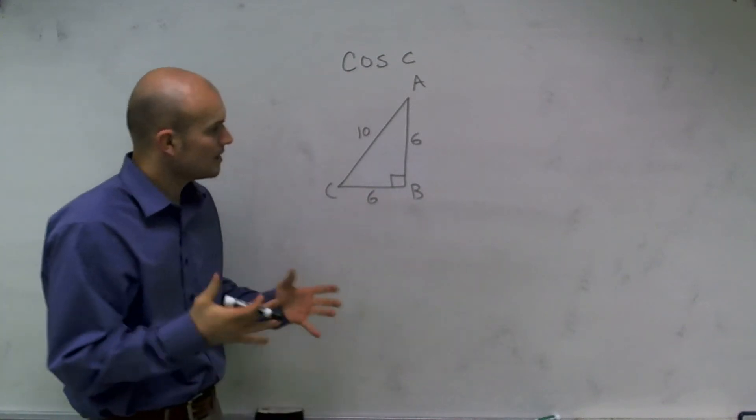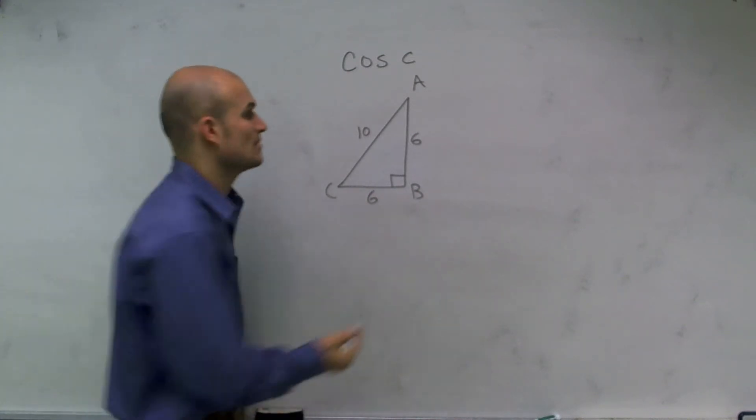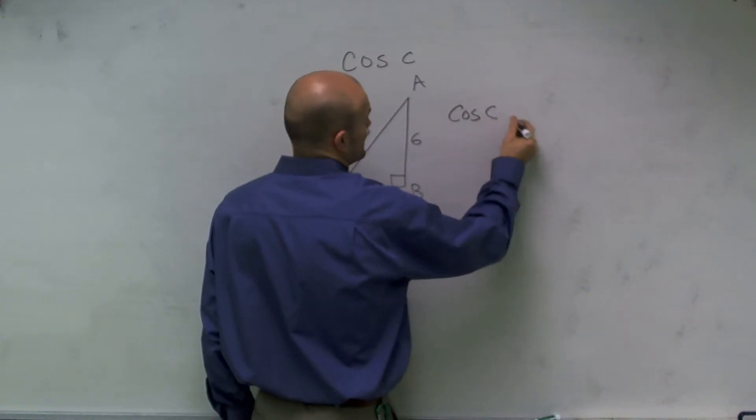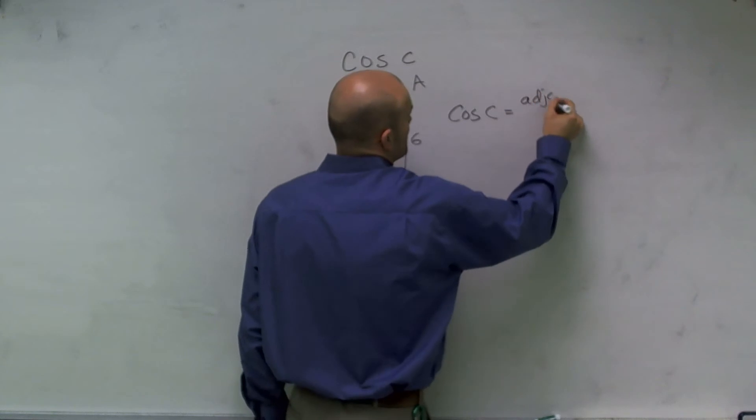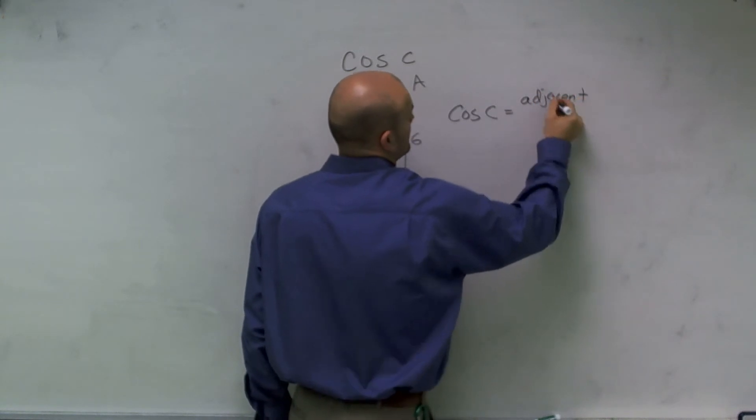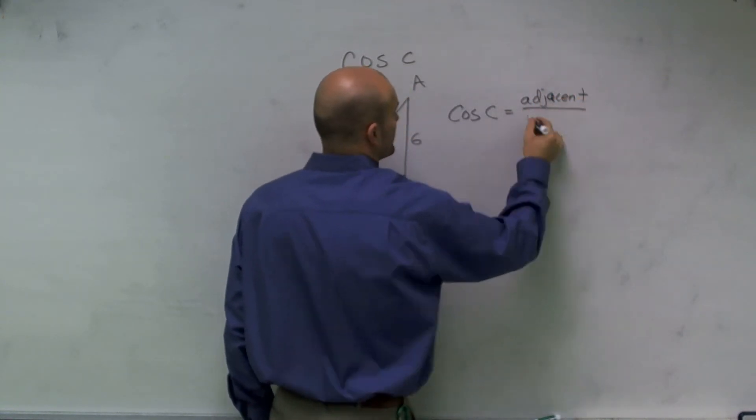So looking at here, we need to remember exactly what cosine represents. So cosine of an angle C is going to be equal to my adjacent side of my triangle over my hypotenuse.